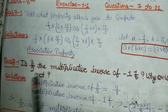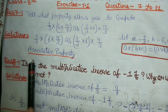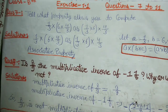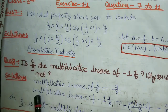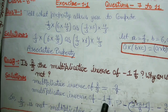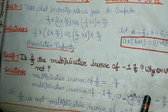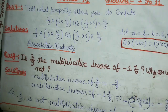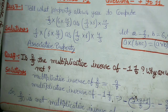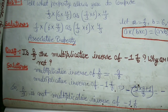Question number 8: Is 8 by 9 the multiplicative inverse of minus 1 and 1 by 8? Why or why not? Yeh mixed fraction mein diya wa hai, toh pehle hum isko fraction mein change kar denge. Multiplicative inverse of 8 upon 9 kya hoga? 9 by 8 ho jayega. Aur minus 1 and 1 by 8 ko proper fraction mein convert karein: minus (8×1 + 1) upon 8 equals minus 9 by 8. Toh reciprocal positive hai jabki number negative hai — so 8 by 9 is NOT a multiplicative inverse of minus 1 and 1 by 8.